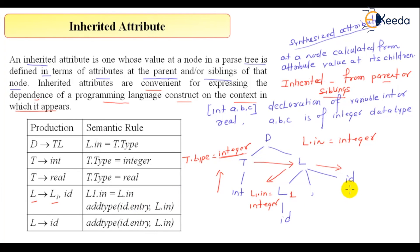So, what is for this id, id it is calling a function, do not get confused with this add type. Add type with this id as a parameter and the second parameter is L dot in, nothing but add type. This will insert this information, this will insert this information into symbol table. So this will update, what it will update, it will update the symbol table, a data structure.